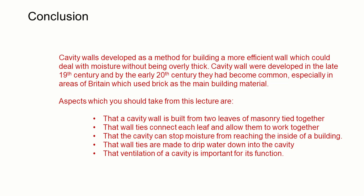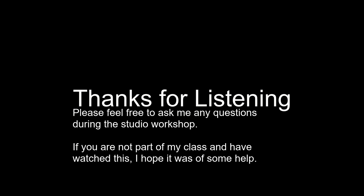In conclusion, cavity walls developed as a method of building a more efficient wall which could deal with moisture without being overly thick. Cavity walls were developed in the late 19th century, and by the early 20th century they had become common, especially in areas of Britain which use brick as the primary building material. Key aspects to take from this lecture are: the cavity wall is built from two leaves of masonry tied together; metal wall ties connect each leaf and allow them to work together; the cavity can stop moisture from reaching the inside of a building; wall ties have a drip on the inside to drop water down into the cavity; and ventilation of a cavity is important for its function.